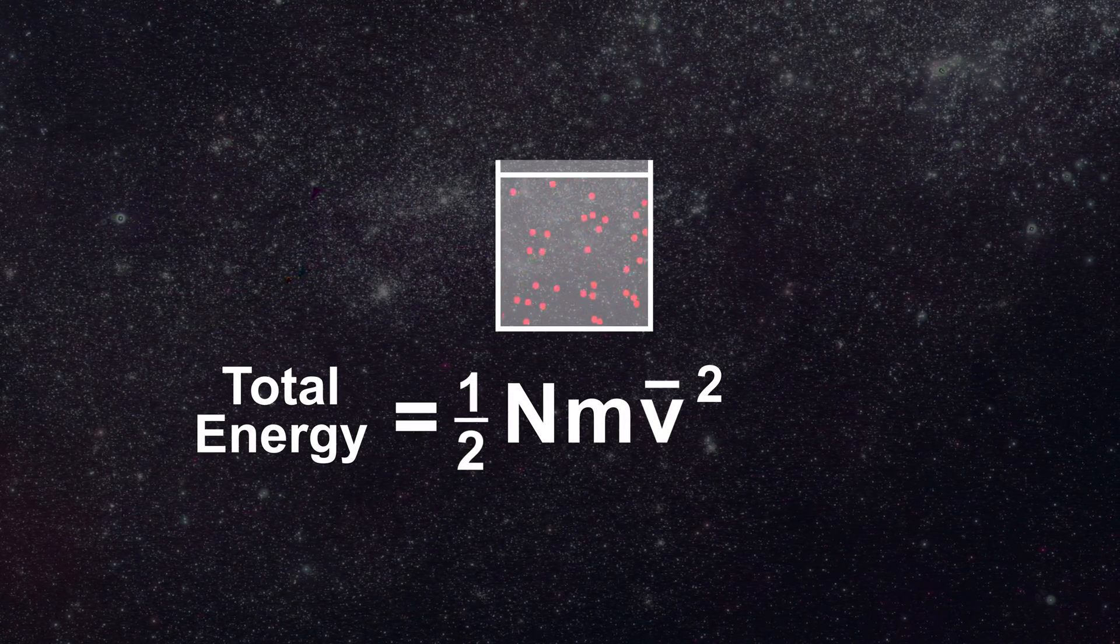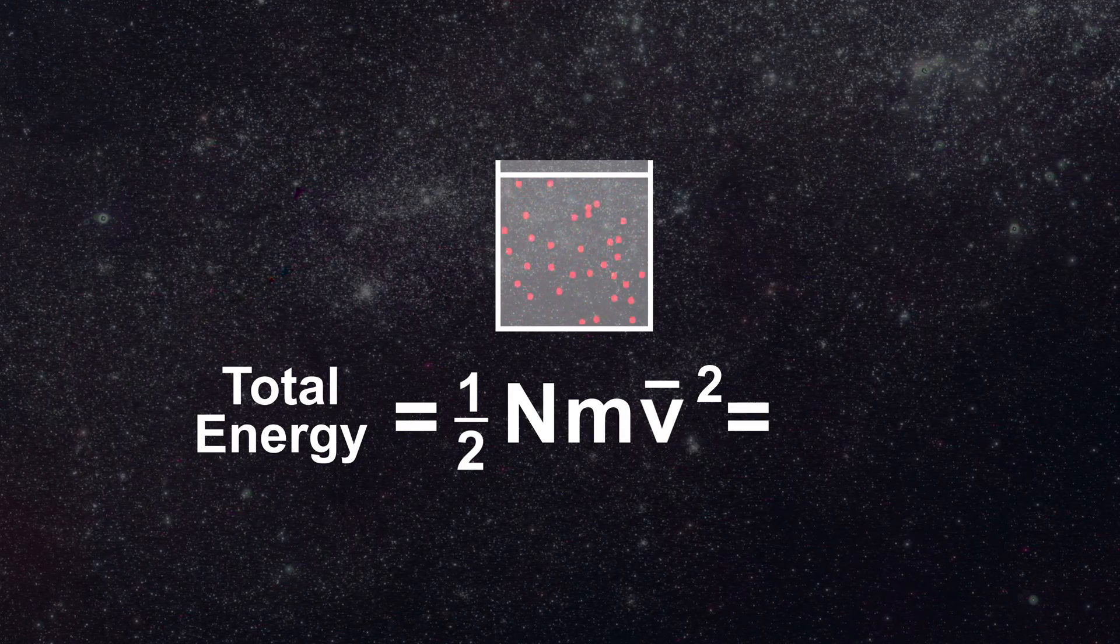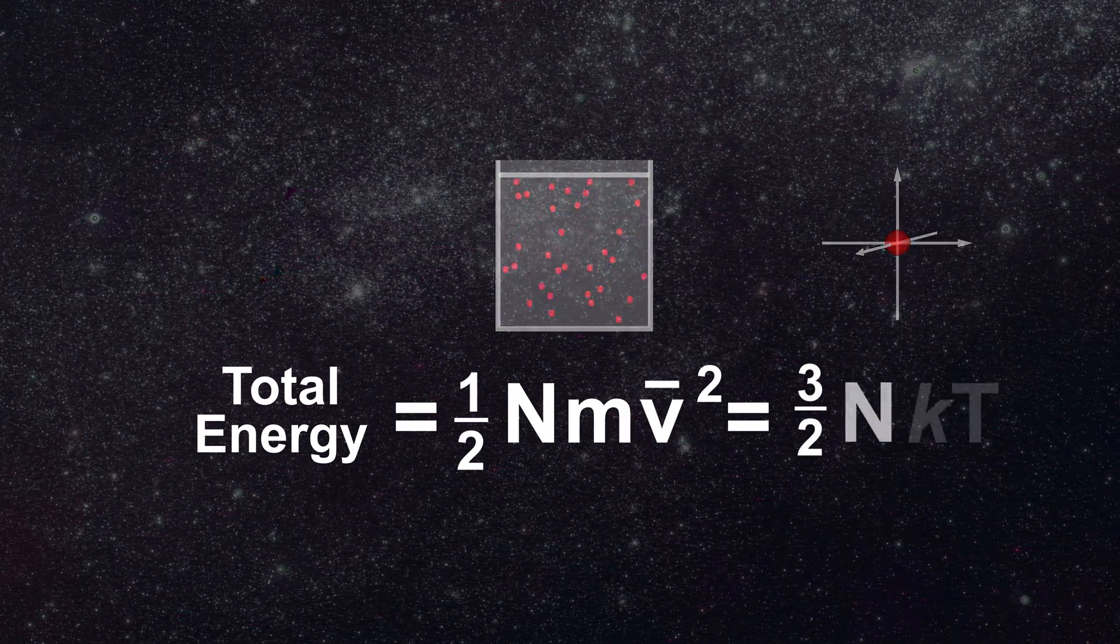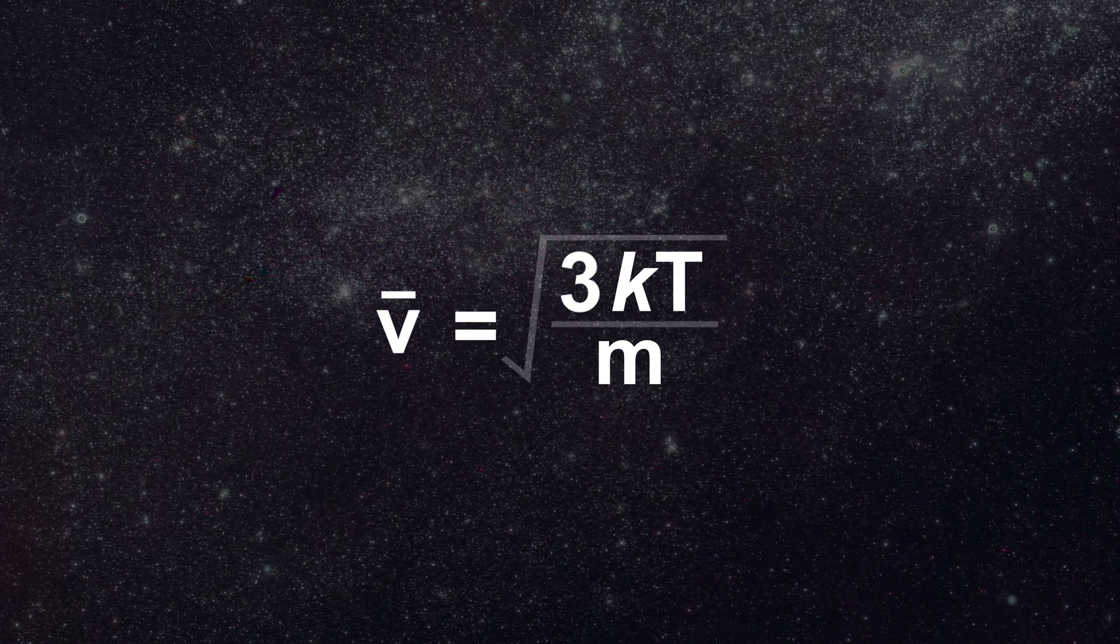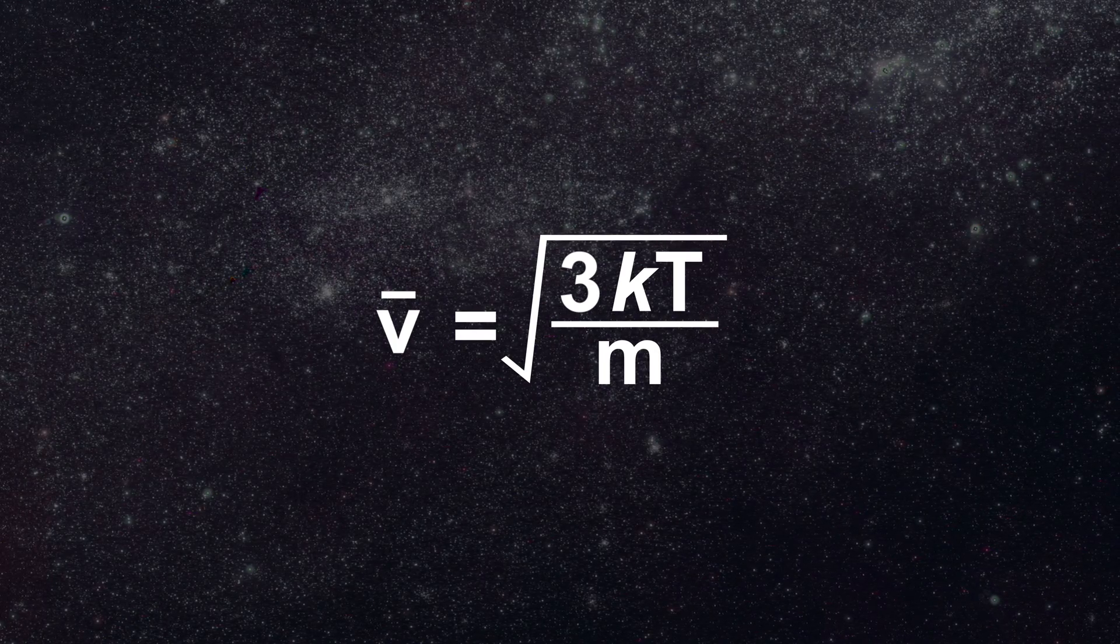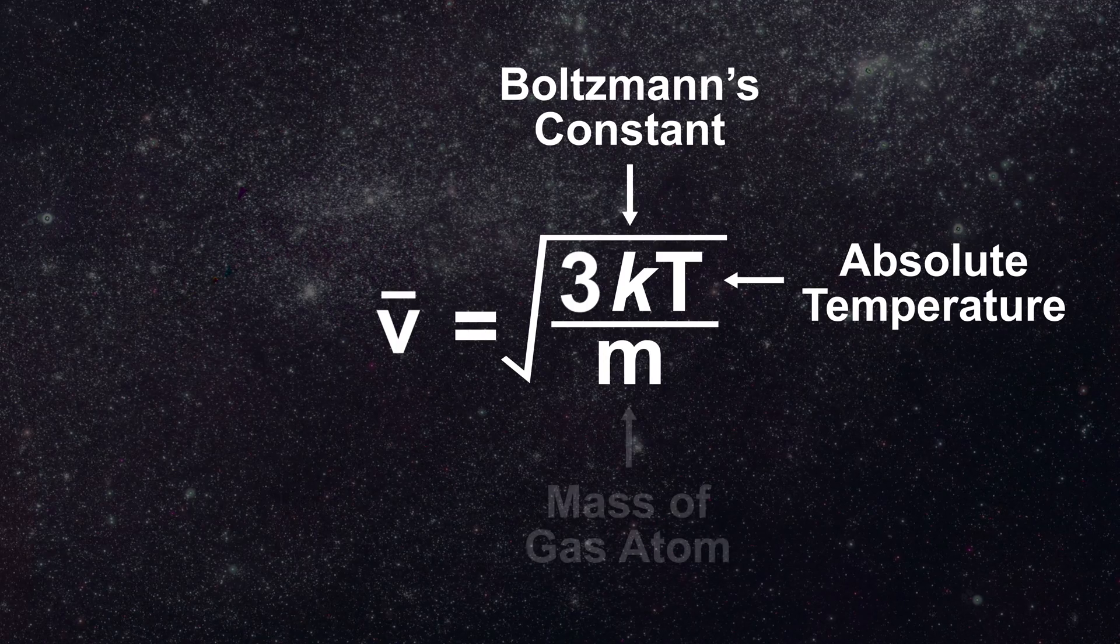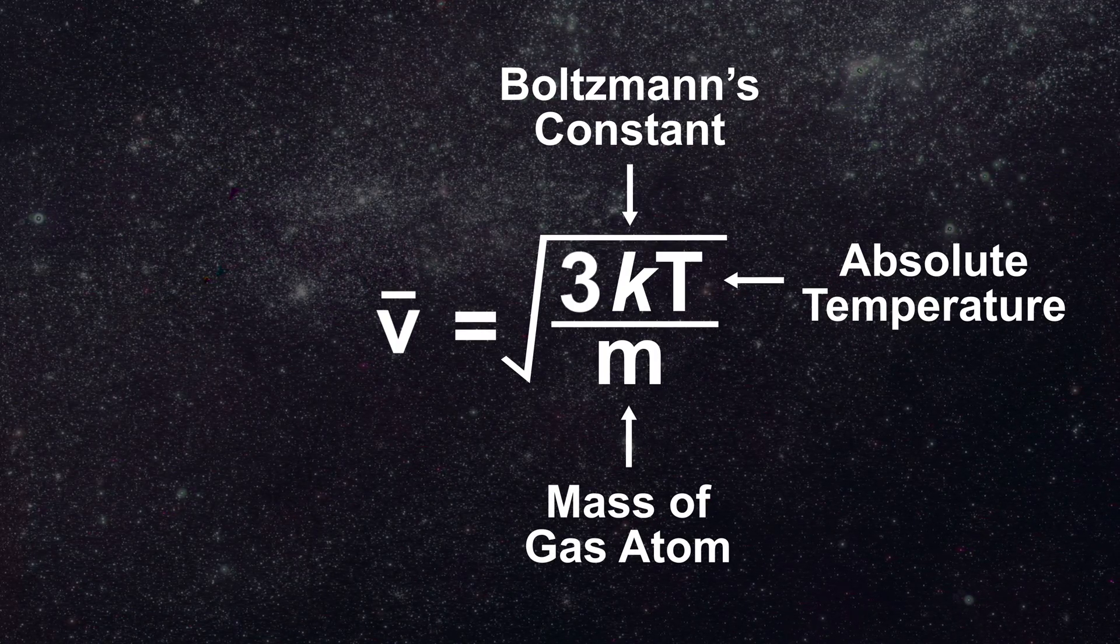Since the total energy of our system is equal to the kinetic energy of motion one half nm v bar squared and also equal to three halves n kt, then the rms velocity of the particles will be equal to the square root of three kt divided by m, where k is Boltzmann's constant, t is the absolute temperature, and m the mass of an individual atom or molecule.